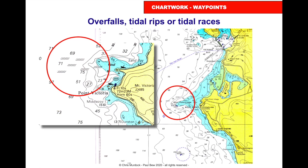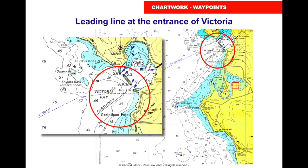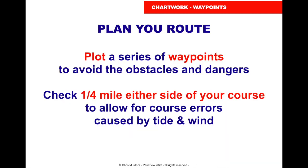Looking at West Point, we can see the tidal races, so we need to go around the outside of that. And as we get into Victoria, we can see the leading line — the two transit lights coming in — so we need to pop a waypoint at the beginning of that, so we know we're at that point going in.